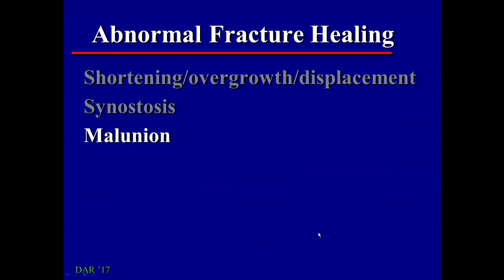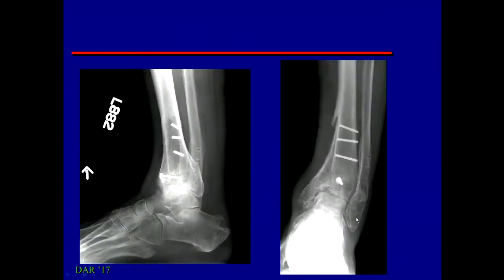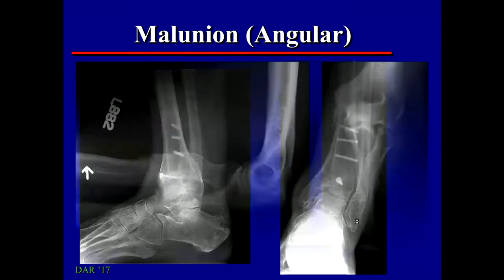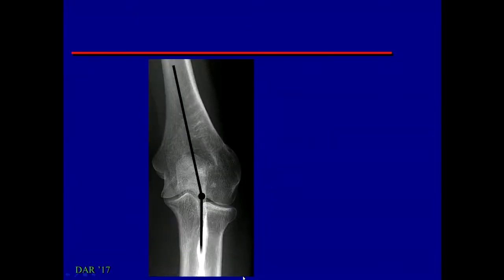Malunion occurs when the fracture has healed with either an angular deformity or a rotational deformity. Here's a patient with a distal tibial fracture — part of their instrumentation has been removed, but we can see the fracture is healed with angulation in the varus direction, same with the fibula. Here's a patient whose proximal radius has healed with angulation, and you can imagine in the forearm that this is going to block normal supination and pronation. A more subtle fracture of the distal humerus has also healed with angulation, resulting in a varus elbow joint.